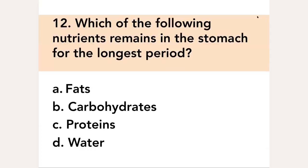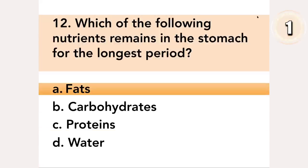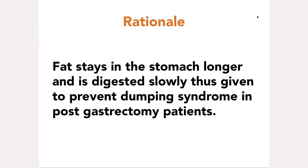Which of the following nutrients remains in the stomach for the longest period? A. Fats, B. Carbohydrates, C. Proteins, D. Water. Answer: A. Fats. Fats stay in the stomach longer and are digested slowly. Thus, they are given to prevent dumping syndrome in post-gastrectomy patients.